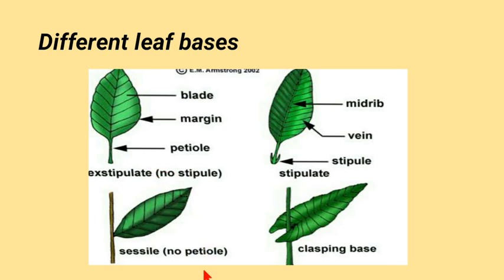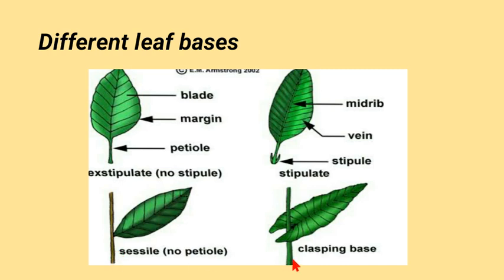On the basis of petiole, leaves can be classified as exstipulate — lacking stipules, which are small leaflets at the leaf base — or stipulate, where stipules are present at the base. A sessile leaf has no petiole and is directly attached to the stem. Some leaves have a clasping base, where the leaf base clasps around the stem.